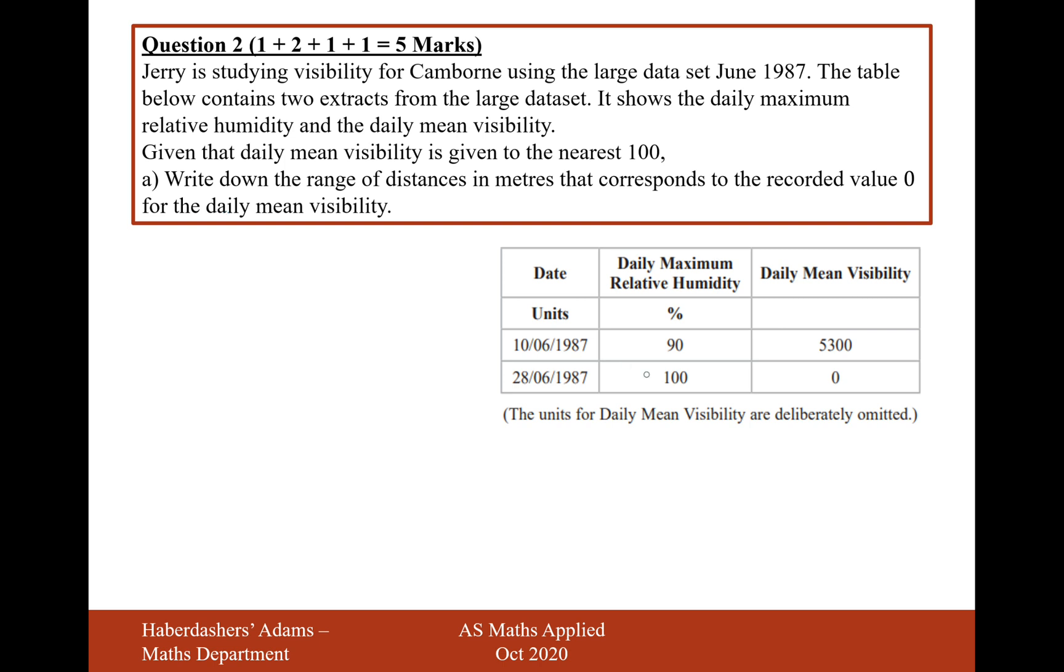We've got the summary statistics here, and it says on the bottom that units for daily mean visibility are deliberately omitted. So I'm thinking that might have something to do with the answer. What is the units for daily mean visibility? That is in decameters or tens of meters. So if this value of 0 has been recorded to the nearest 100, then that must mean that data value is between 0 to 50. But it's 0 to 50 decameters, and the answer wants it in meters. So therefore the answer to part A is going to be 0 meters to 500 meters. That's what 50 decameters is. A decameter is 10 meters.